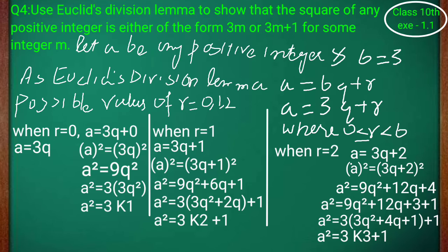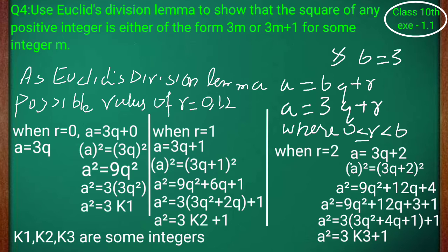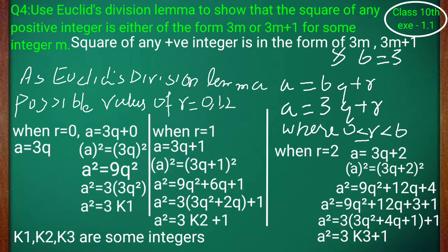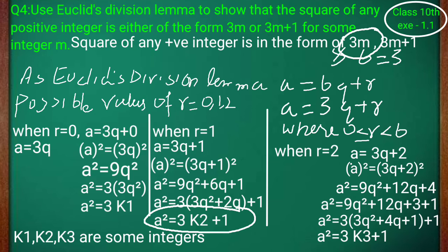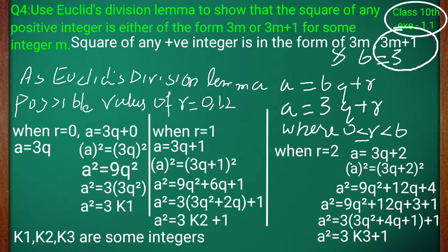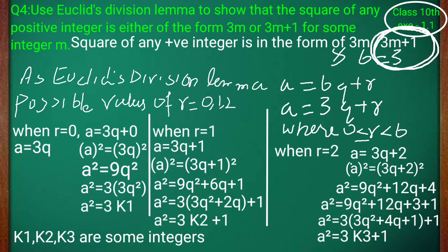اب یہ k1، k2، k3 — یہ کیا ہیں؟ یہ کوئی integer ہیں — k1, k2, k3 are some integers۔ تو square of any positive integer is in the form 3m یا 3m plus 1۔ جب r=0 تھا، a²=3k1 — k1 کی جگہ m لکھ دیا؛ جب r=1 تھا، a²=3k2+1 — k2 کی جگہ m؛ جب r=2 تھا، a²=3k3+1 — k3 کی جگہ m۔ یہی approve کرنا تھا کہ کسی بھی positive integer کا square 3m یا 3m plus 1 کی form میں ہوتا ہے۔